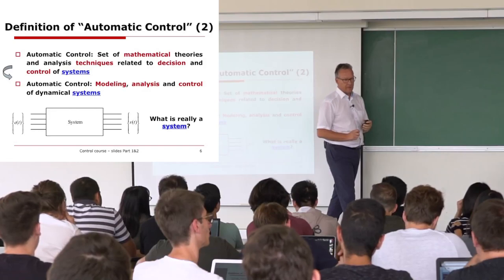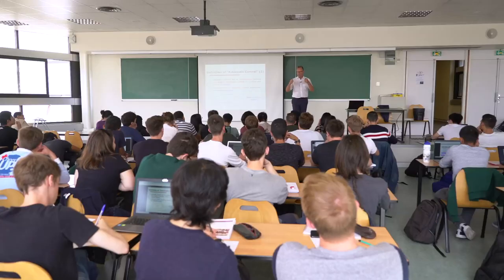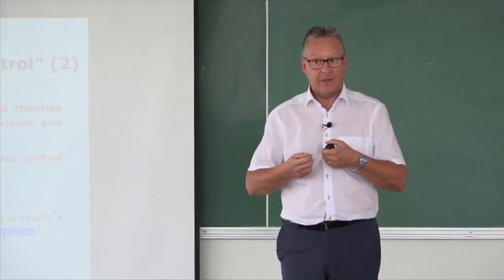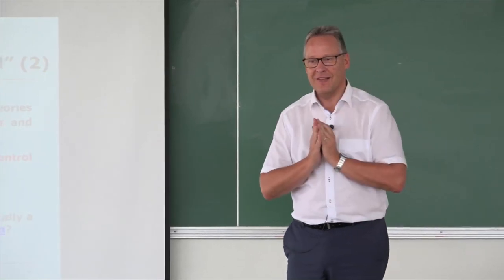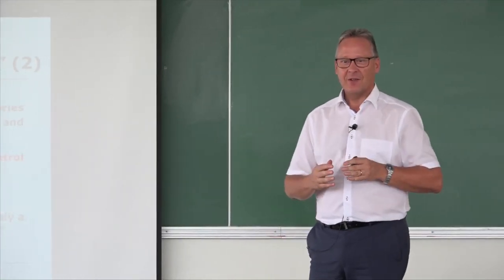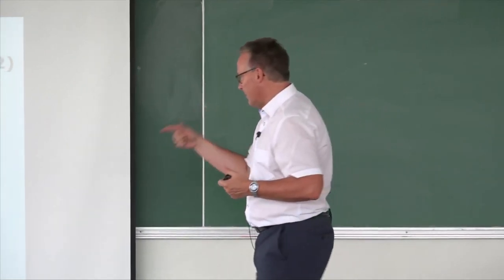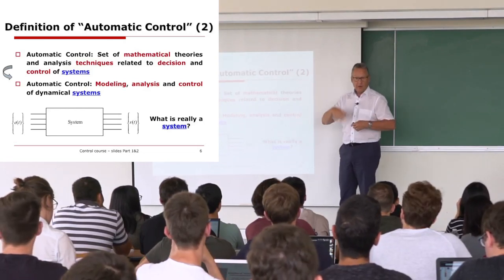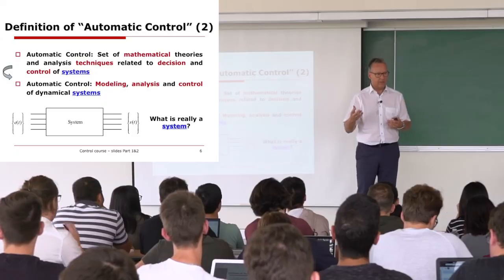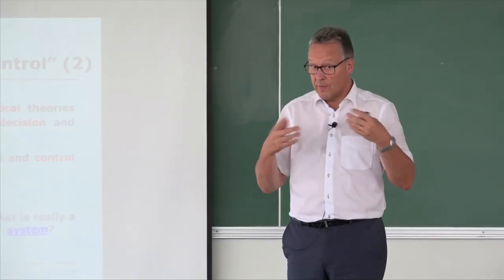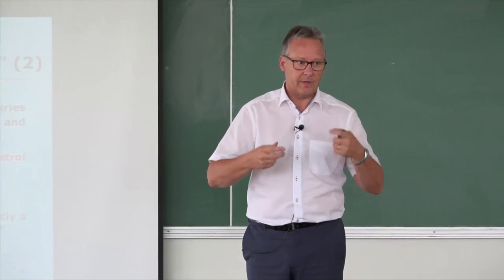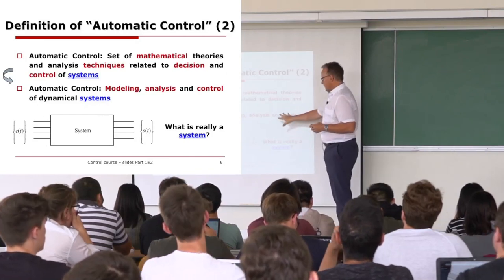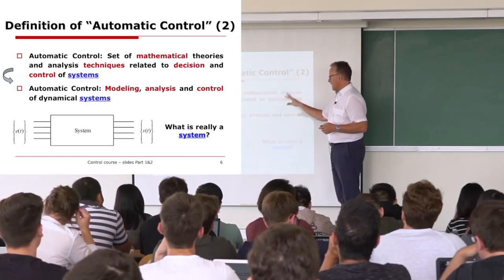Based on the model, you need to analyze the performance of your system without control — what can this system do? And of course, if it works perfectly that's good, but it's never the case, fortunately. Then you have to improve. Based on the results of the analysis phase, the last step is control. You will learn several control strategies, and according to the system you will choose the most adapted one. So: modeling, analysis, and control of dynamical systems.